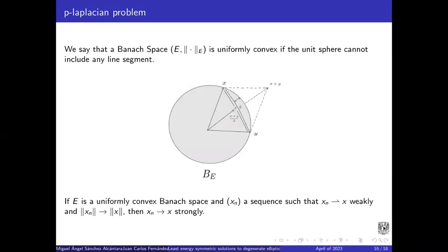Also, we say that a Banach space is uniformly convex if the unit sphere cannot include any line segment. As examples, as uniformly convex spaces, we have Hilbert spaces and the Sobolev spaces. If X is a uniformly convex Banach space, and x_n a sequence such that x_n converges weakly to x, and we have this condition on the norm, then the sequence converges to x strongly in norm.